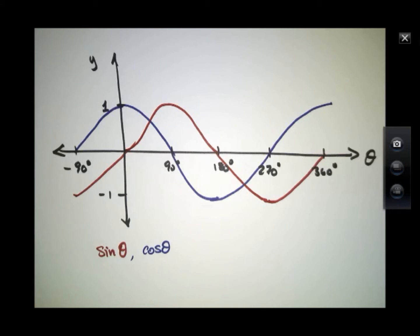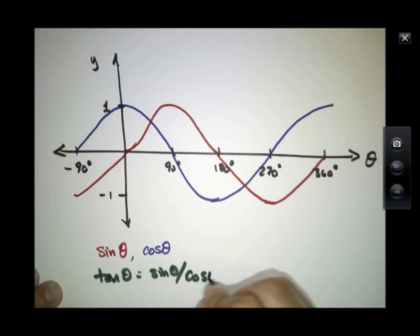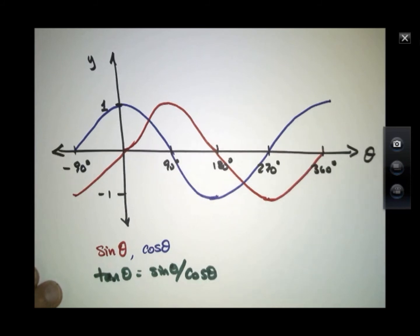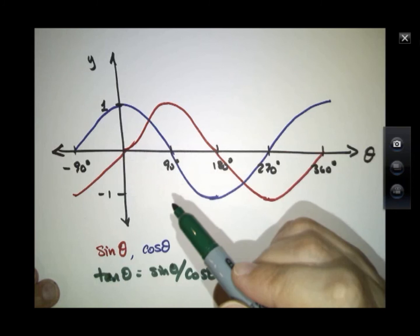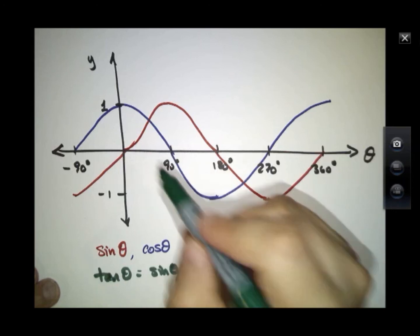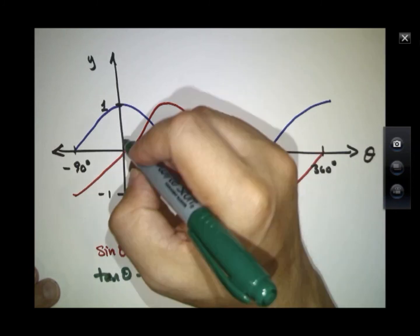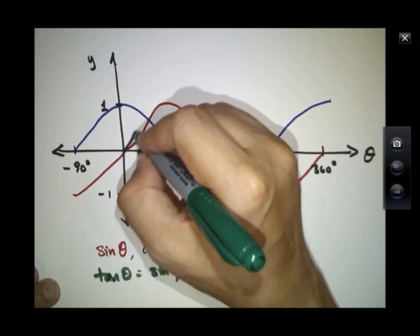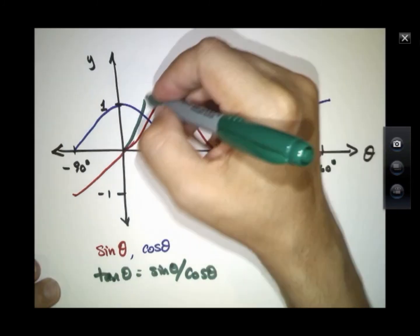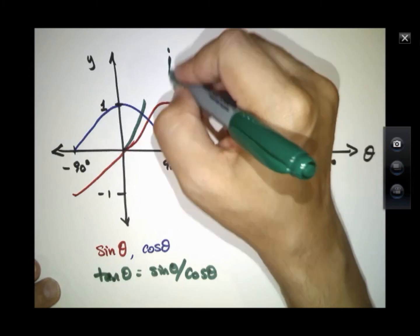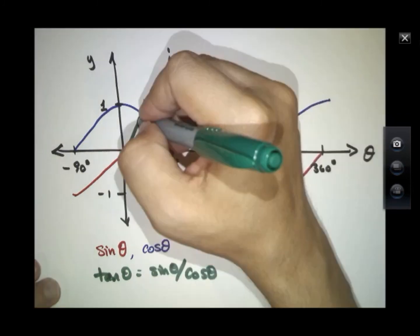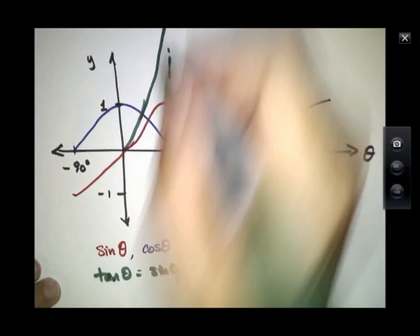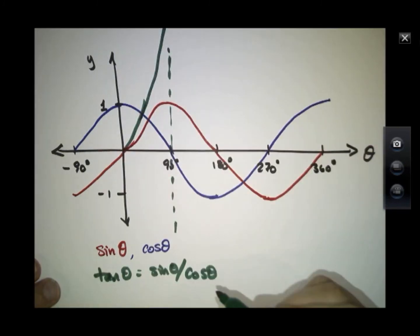The tangent is a little funny. The tangent is sine of theta divided by cosine theta. So it starts out at zero. It's one right here. And it just keeps on going up. So at 90 degrees, it's infinite.